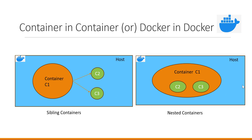Here in the diagram, this is the first method and this is the second method. In the first method, we have the concept of sibling containers. This is the host where we have Docker engine installed and we start a container within this host — for example, Jenkins master. Within this container, if we need to perform some other Docker builds, those builds will create containers. These containers can be created outside the main container as siblings to it. In the first method, these containers will be created as siblings to the main container within the same host.